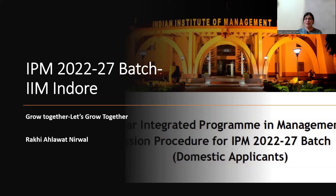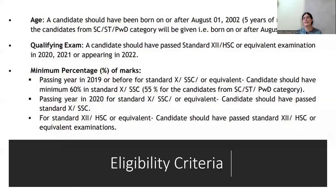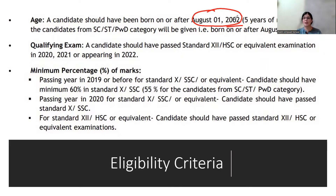The first question students have is about the eligibility criteria. The first parameter is age. If you belong to the General or OBC category, your age will be calculated from 1st August 2002, meaning you should be born after 2002. If you belong to the SC, ST, or PWD category, then your age calculation will be from 1st August 1997.